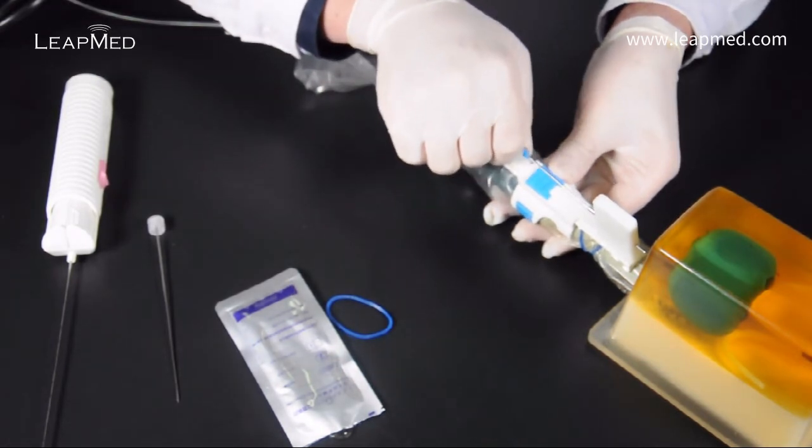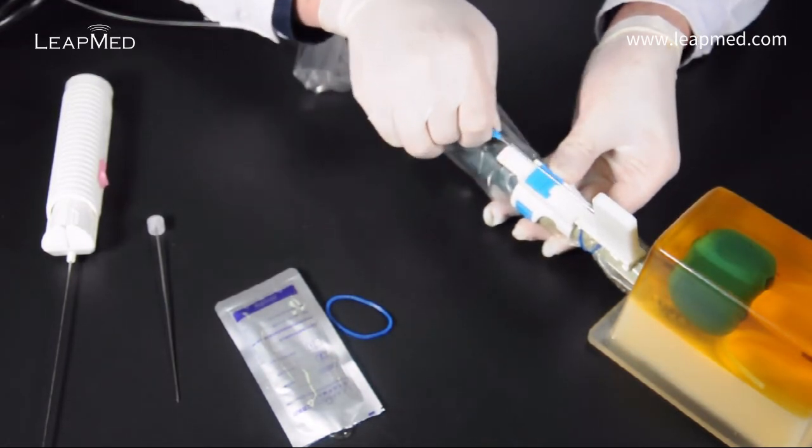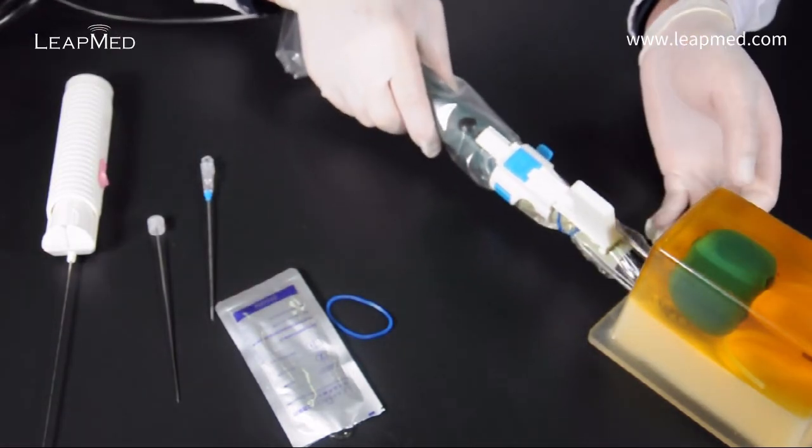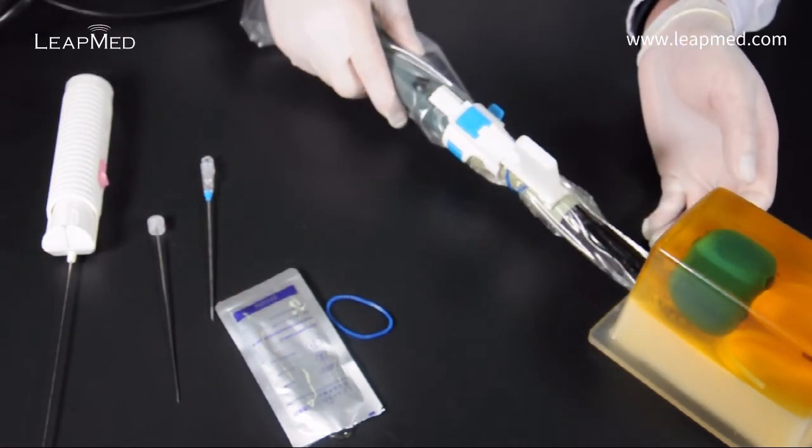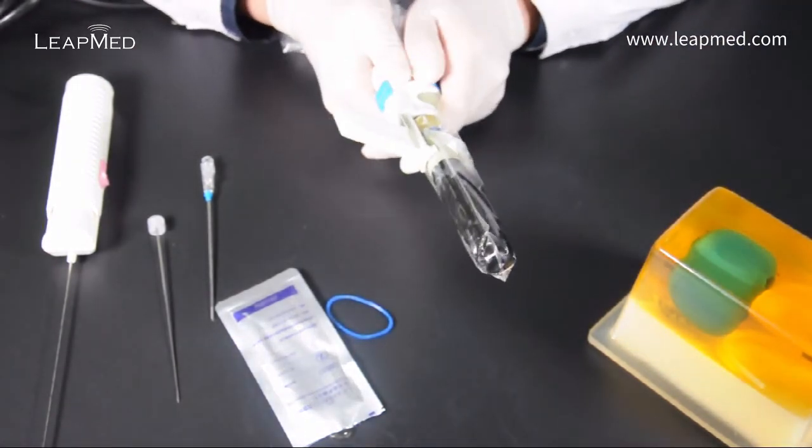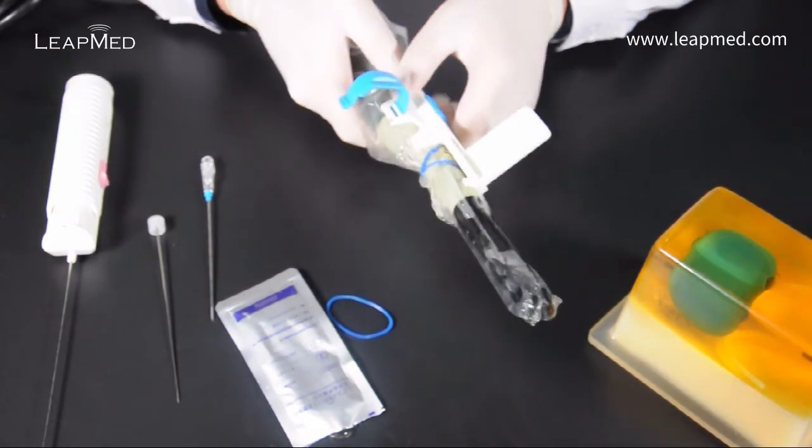Once you've finished the procedure pull the probe from the rectum slowly. Dismantle the guide from the probe. Pull the cover from the transducer and the procedure is complete.